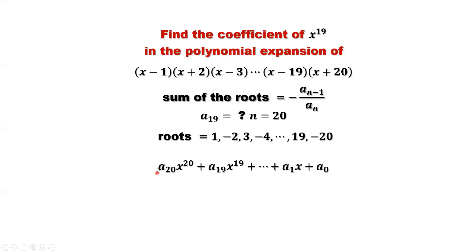Our situation is this: the highest term is x to the power 20, so A20 is the leading constant. We want to find A19. If we tried to expand this expression into that format directly, it would take a long time — it's not easy to find A19 that way. This shortcut using the result makes it quick.